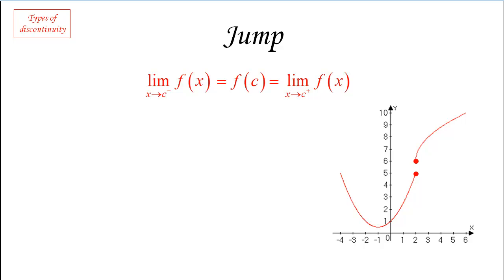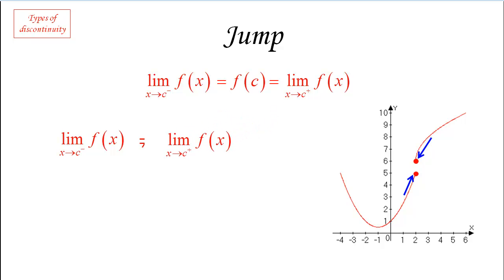A jump is a situation where the function suddenly goes from one position to another without gradually and continuously moving between them. We do have a left limit and a right limit, but the problem is that those two values are not the same. The function may even be defined at c — at the top, bottom, or somewhere else — but the key is that the limit from the left and the limit from the right are unequal. When that happens we have a jump.